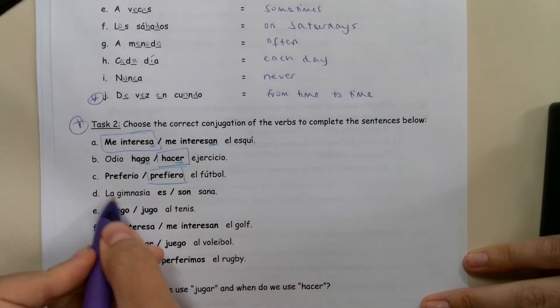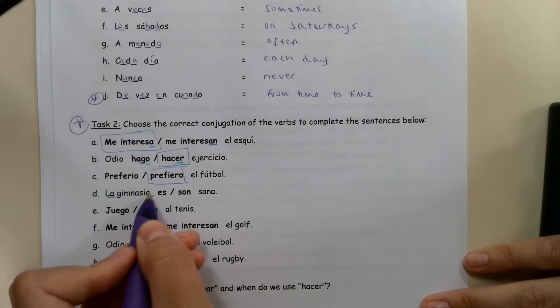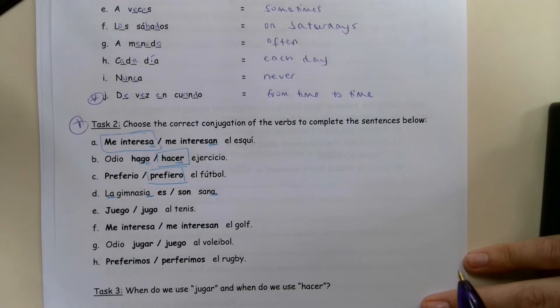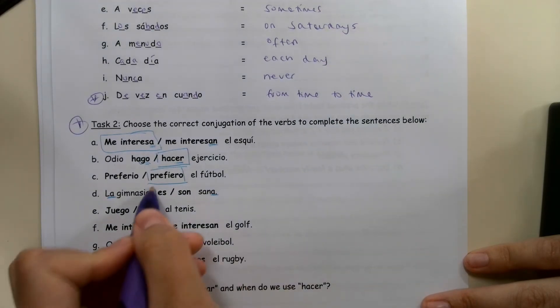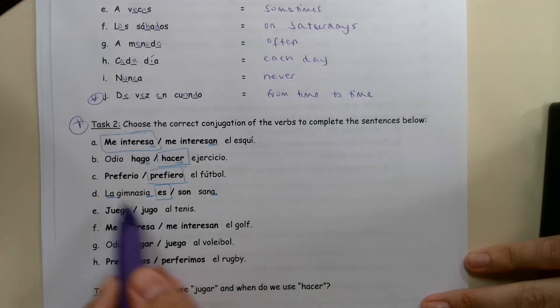Here we are talking about la gimnasia, which is gymnastics. So we know that this is singular in Spanish because it's la gimnasia. There's no S's in the Spanish word. And the same are describing words, sana, healthy. There's no indication of it being plural. So we need to use is. Gymnastics in Spanish, we would say gymnastics is healthy because it's a singular word.